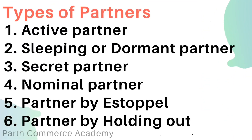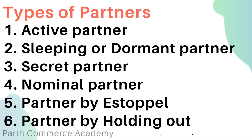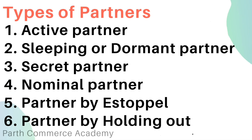Now let's see types of partners. There are different types of partners with different roles and liabilities. Understanding all these types of partners is important for a clear understanding of their rights and responsibilities. The types are: active partner, sleeping partner, secret partner, nominal partner, partner by estoppel, and partner by holding out.